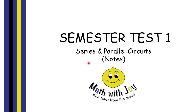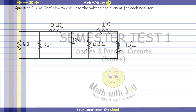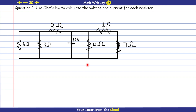Welcome to semester test one preparation. In this lesson we are going to look at series and parallel circuits. This question is a combination of a series circuit and a parallel circuit. The question says: use Ohm's law to calculate the voltage and the current for each resistor. We need to work out the current for each resistor as well as the voltages — this is a very big circuit.